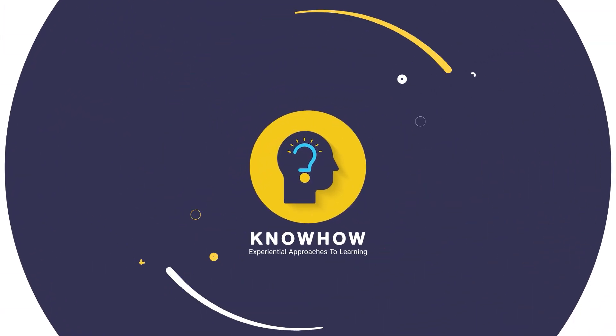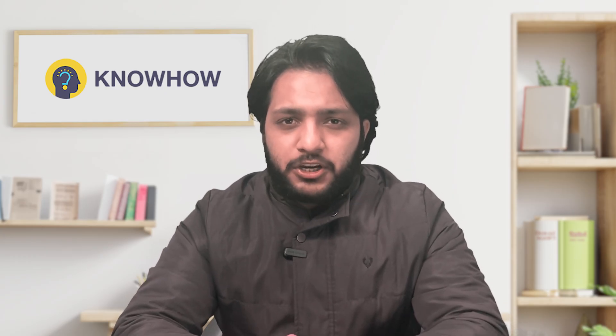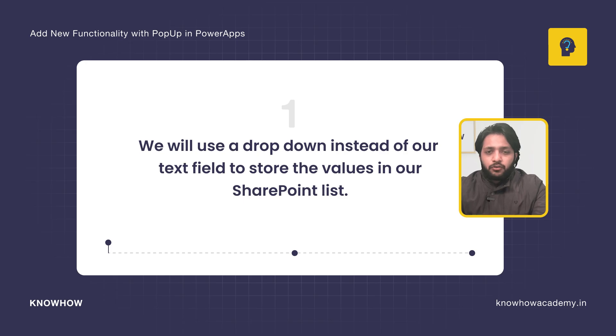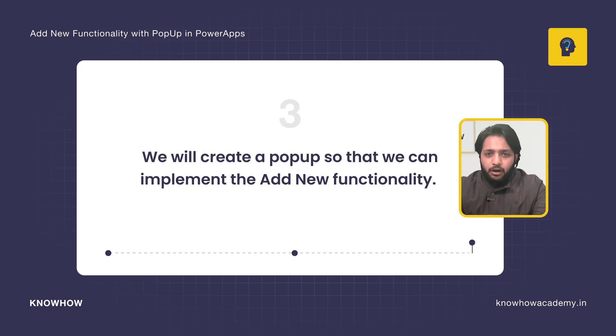Hi, I'm Gaurav from KnowHow Academy. As we know, PowerApps doesn't provide an add new functionality by default, but we can make some alterations by creating a collection and using it in our PowerApps application. In this video, we will use a drop-down instead of a text field to store values in our SharePoint list, create a collection to populate our drop-down values, and create a pop-up to implement the add new functionality.